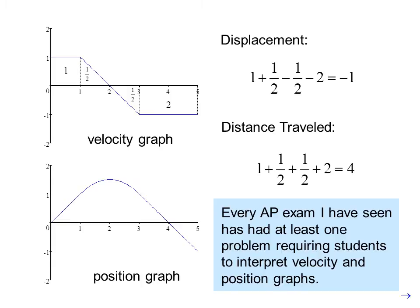Every AP exam I have seen has had at least one problem requiring students to interpret velocity and position graphs. When you encounter a graph like this on an AP question, the first thing you need to do is determine what you are looking at. Are you looking at velocity or position? Are you looking at the original function, first derivative, second derivative? Before you do anything else, make sure you have read the problem closely.